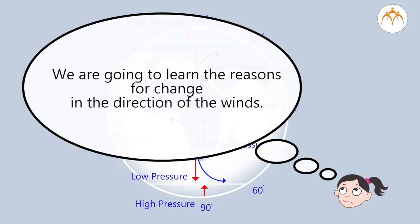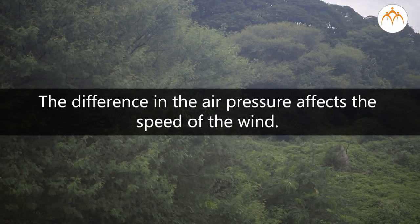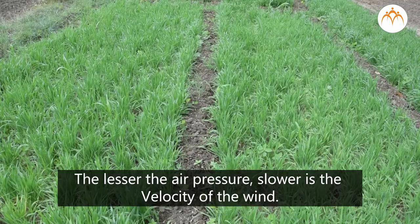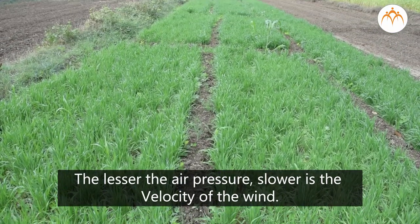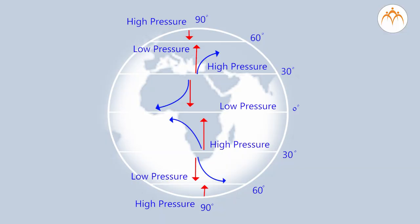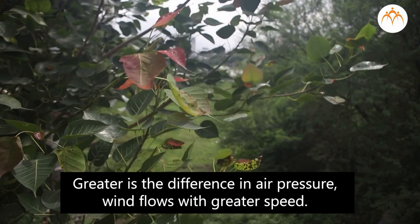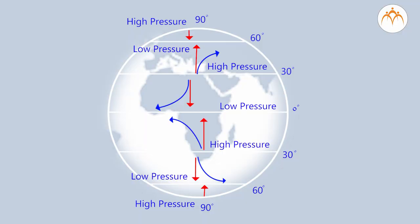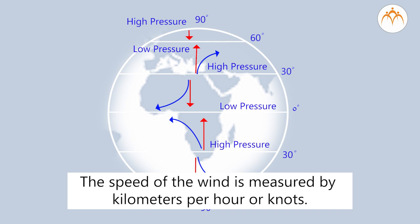We are going to learn the reasons for the change in direction of winds. The difference in air pressure affects the speed of wind. The lesser the air pressure difference, the slower the velocity of the wind. Greater difference in air pressure means the wind flows with greater speed. The speed of wind is measured by kilometers per hour or knots.